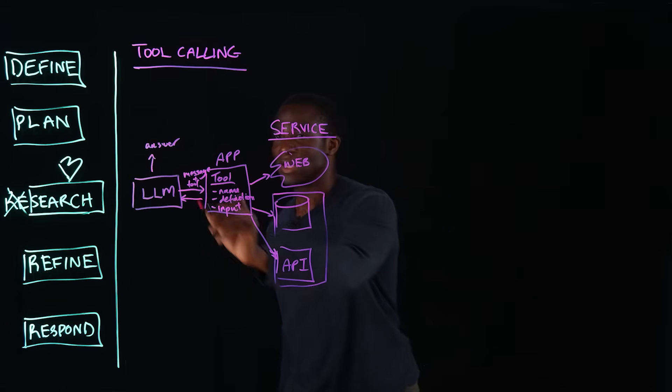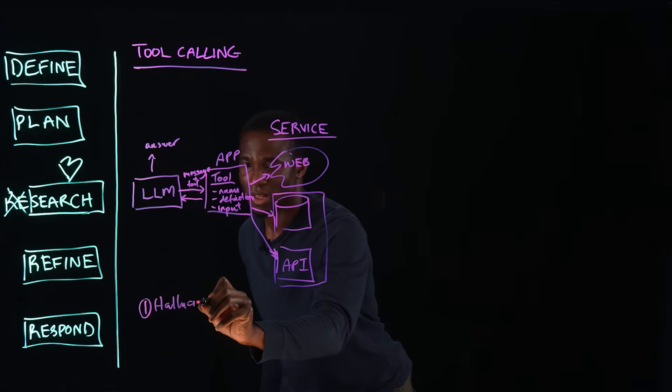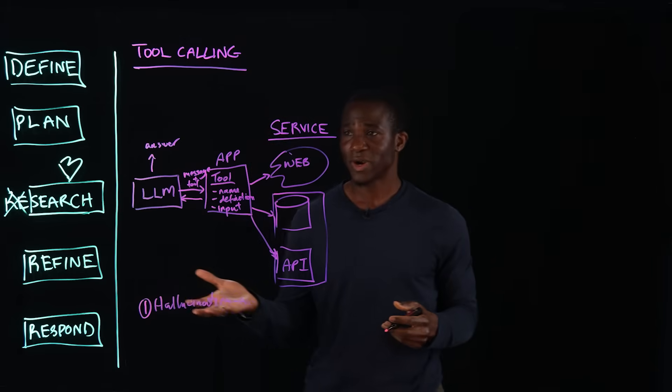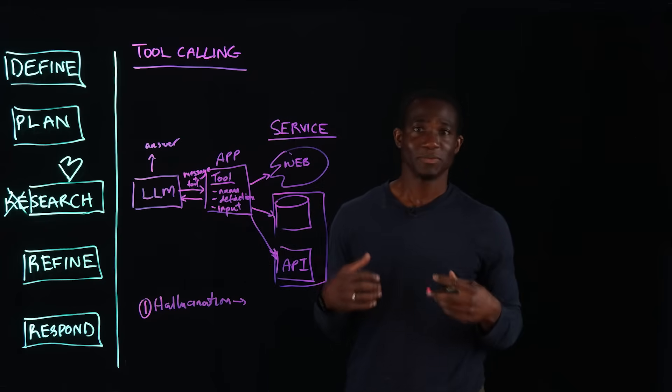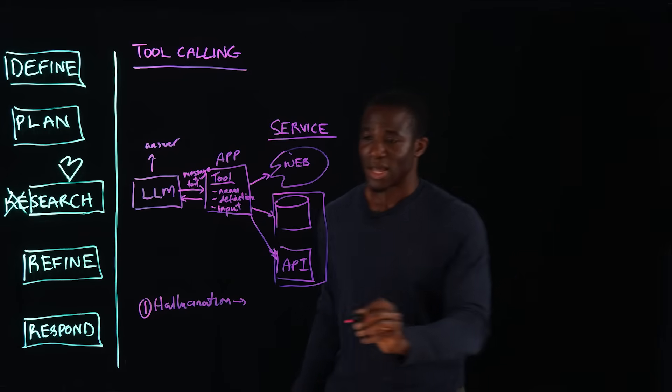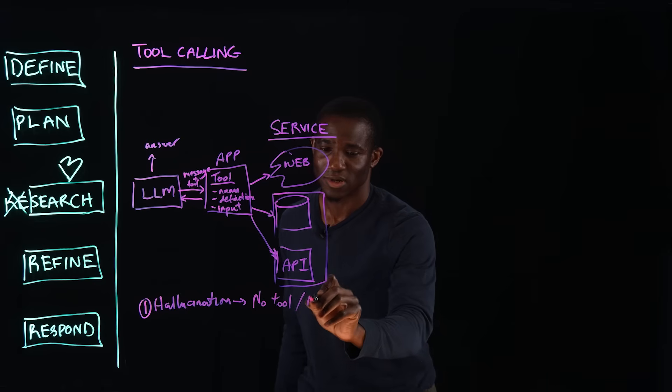For example, this LLM can hallucinate. So, in response to a query, when it generates this message and this tool, it could just make up a tool name for a tool that doesn't exist. And so, no tool, no data.